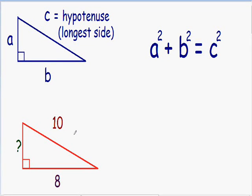Welcome to my second example on the Pythagorean Theorem. In this particular example, we have a triangle with one side with a length of 10, another side with a length of 8, and a third side with a length that we don't know at the moment that we're trying to solve for.